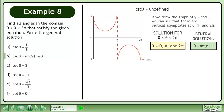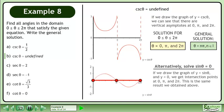The general solution is θ equals nπ, where n belongs to the set of integers. Alternatively, solve sine θ equals 0. If we draw the graph of y equals sine θ and y equals 0, we get intersection points at 0, π, and 2π. This is the same result we obtained above.